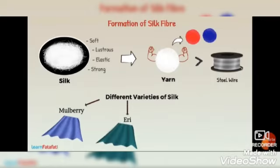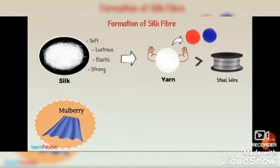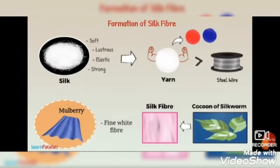There are different varieties of silk, of which mulberry, eri, tasar and moonga silk are of commercial importance. Most commercial silk is mulberry silk, which is a very fine white fiber. Silk fibers are obtained from the cocoon of the silkworm.